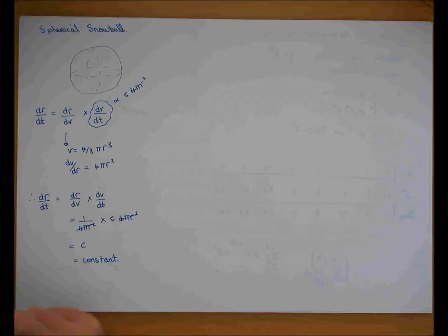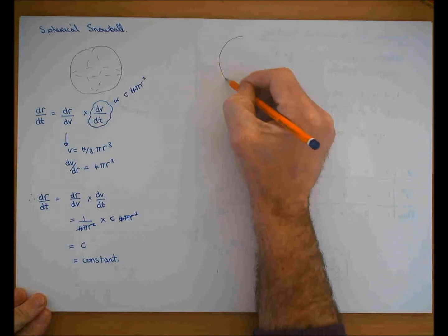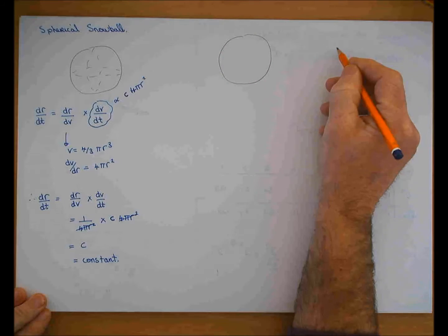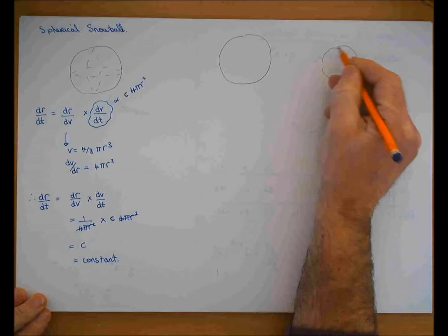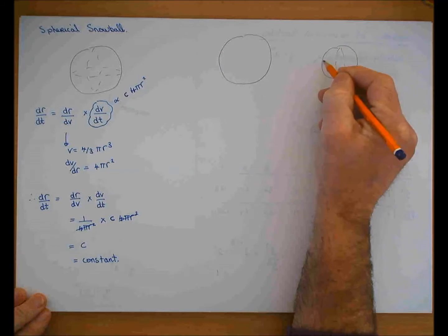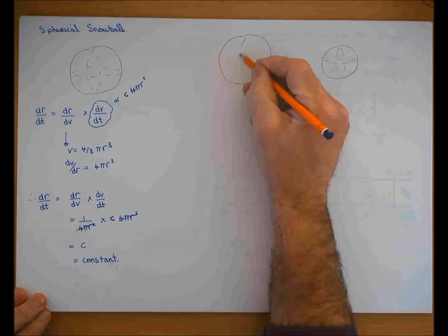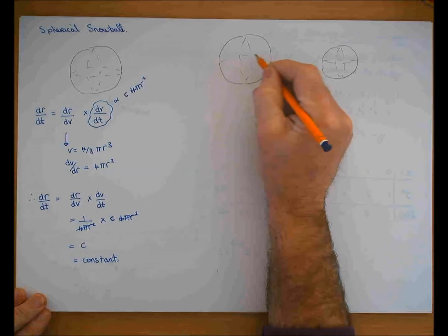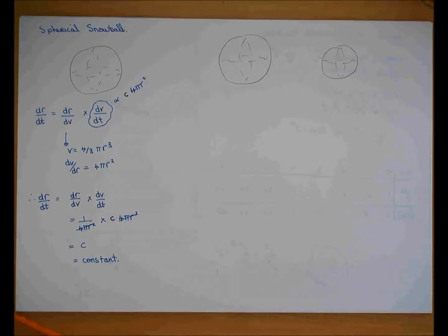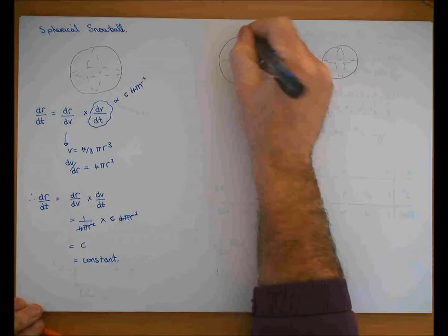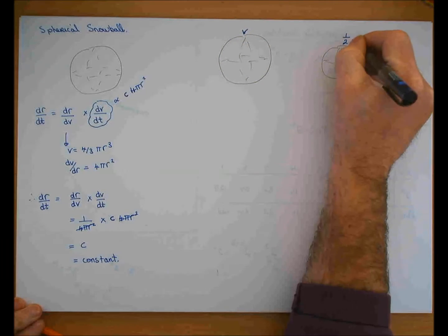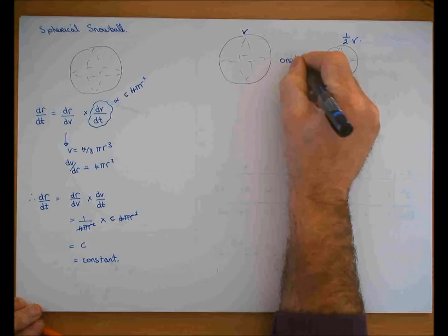The next bit: if a snowball loses half its volume in an hour, so this snowball goes from there to there, half its volume, and that, if that's V, that's half the volume, and that takes 1 hour.